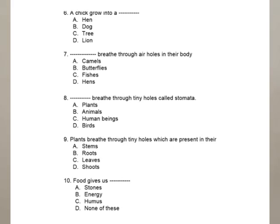Question 8: dash breathed through tiny holes called stomata. The four options are plant, animals, human beings, and birds. Plants breathe through tiny holes called stomata, which are present in their leaves. So plant is the right answer.